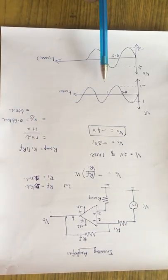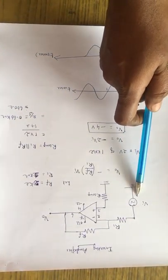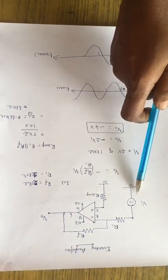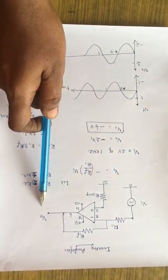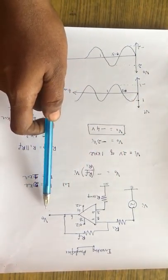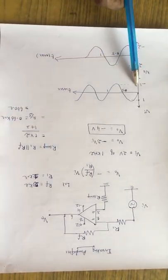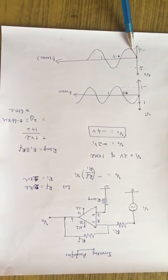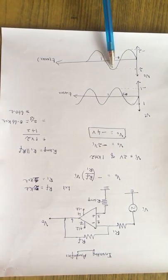It is indicated in your diagram. Input side we are measuring the input voltage of 2 volts of 1 kilo hertz. At the output side we are measuring the amplified inverting output that is 180 degree phase shift output of magnitude 4.